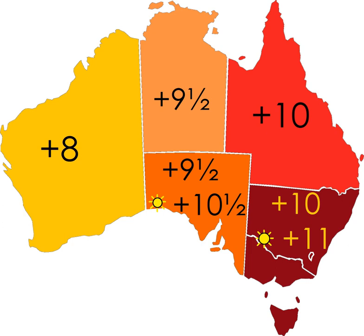The clocks were set ahead of GMT by eight hours in Western Australia, by nine hours in South Australia and the Northern Territory, and by ten hours in Queensland, New South Wales, Victoria, and Tasmania. The three time zones became known as Western Standard Time, Central Standard Time, and Eastern Standard Time.